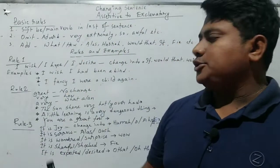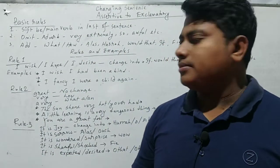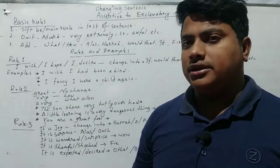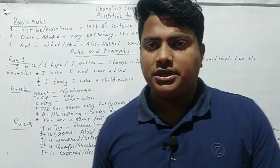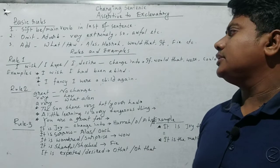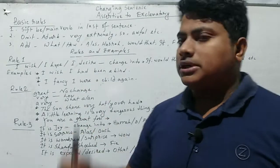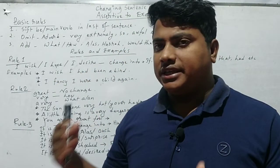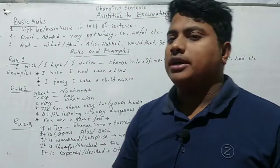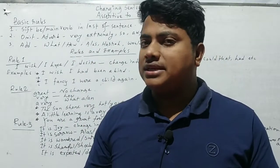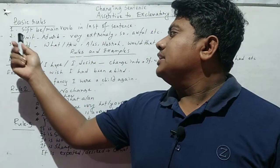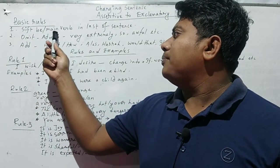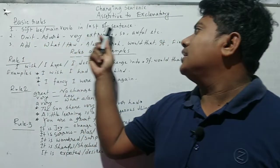Here I show just three rules. By these three rules we can learn assertive to exclamatory changing and transformation. However, before going to change assertive to exclamatory, we have to know the basic rules. The basic rule is to always shift the be verb or main verb to the last position of the sentence.